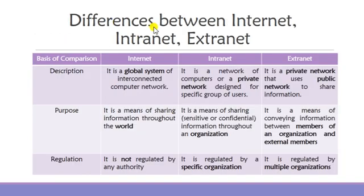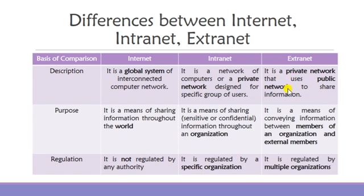Now let us look at the differences between internet, intranet, and extranet. Based on description: internet is a global system of interconnected computer networks. Intranet is a private network designed for a specific group of people within an organization. Extranet is a private network that uses a public network to share information — internal members use the private network while external members use the public network, and it is also meant for a specific group of users.